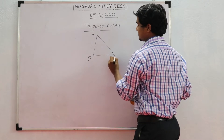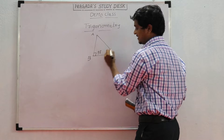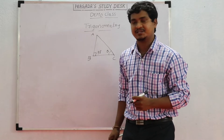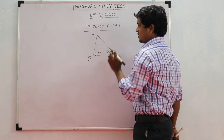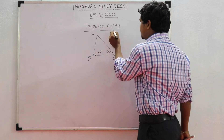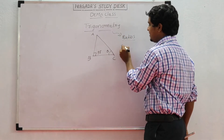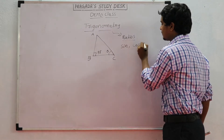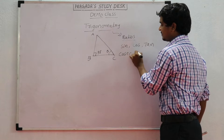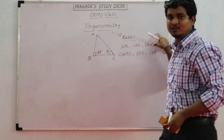In a triangle A, B, C, I took 90 degrees at B and C as theta. Theta is nothing but an angle, and angle represents direction. We need to find out the trigonometry ratios: sine, cosine, tan, cosecant, secant, and cotangent — these 6 trigonometry ratios are used in trigonometry.